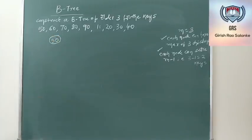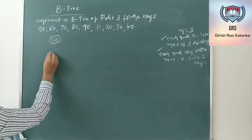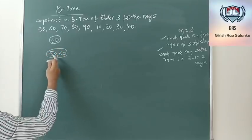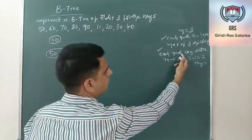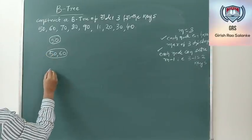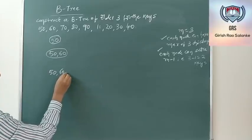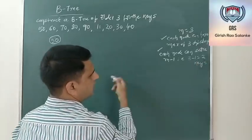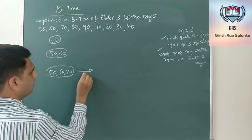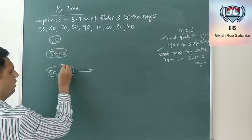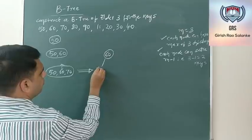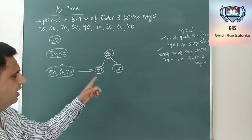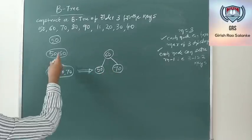First insert 50 — no problem. Next insert 60: since 60 is greater than 50, it goes to the right, giving node [50, 60] which is allowed (max 2 keys). Next insert 70: placing 70 here would give 3 keys, which is a violation. So we promote the middle element, 60, as the parent. The tree now has 60 as root, with 50 as left child and 70 as right child. All leaf nodes (50 and 70) are at the same level.